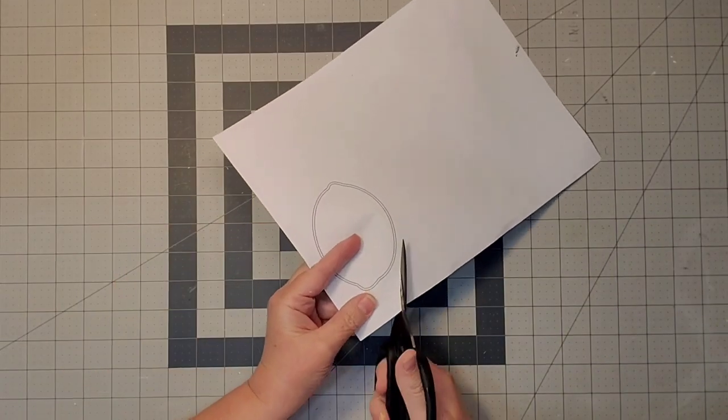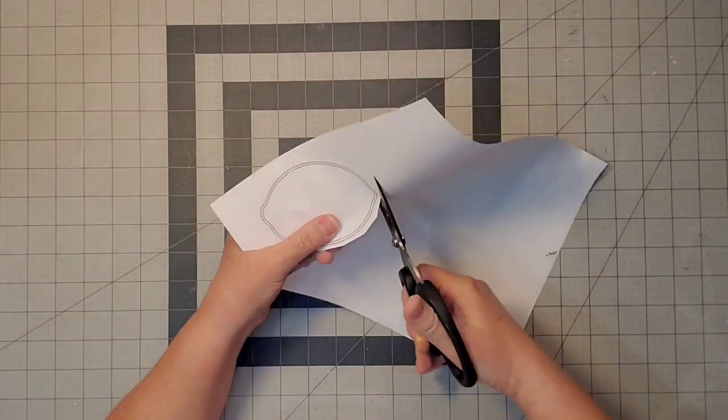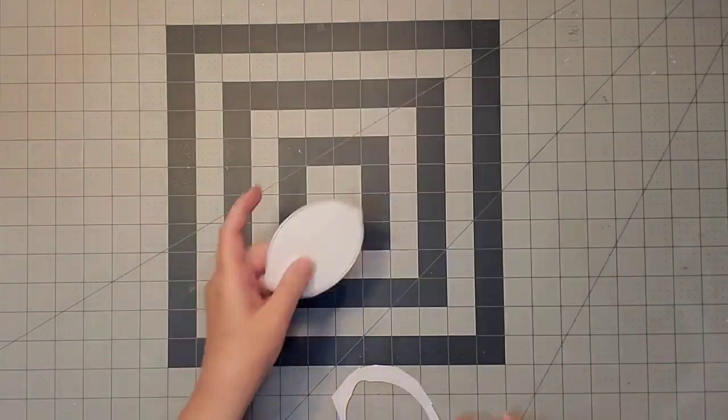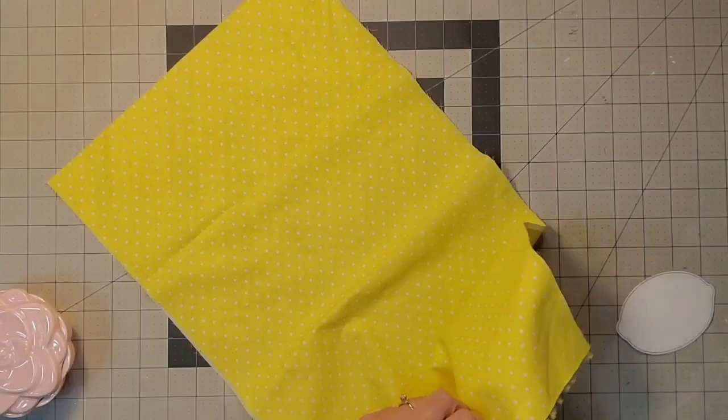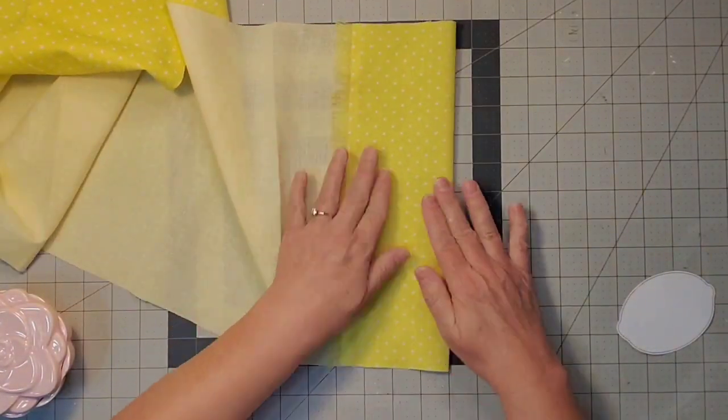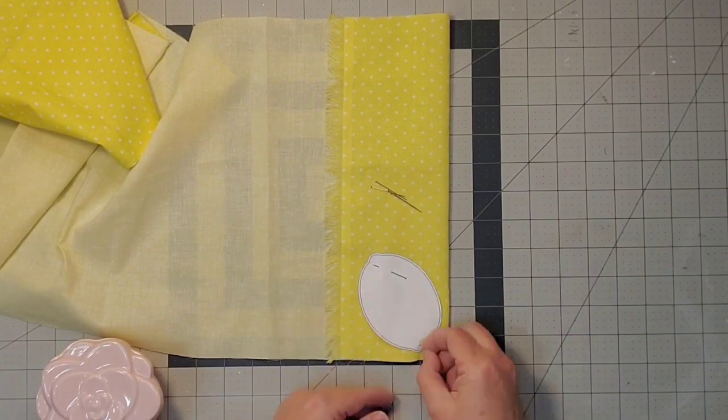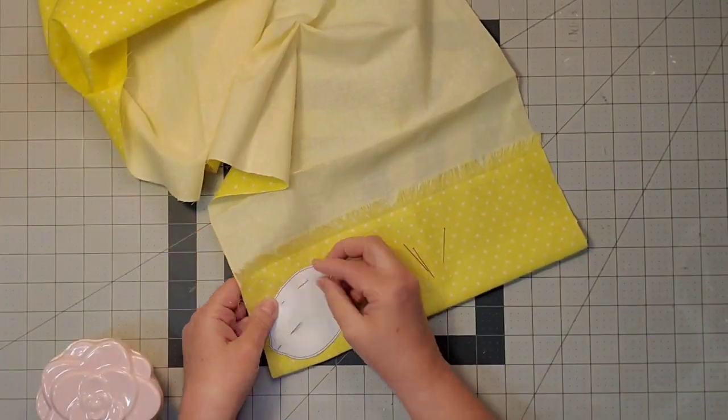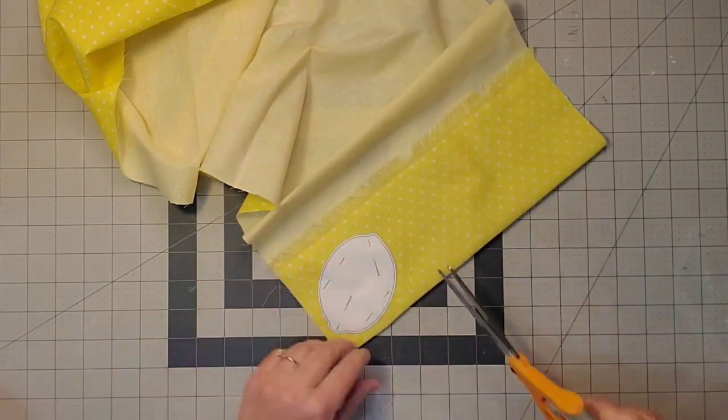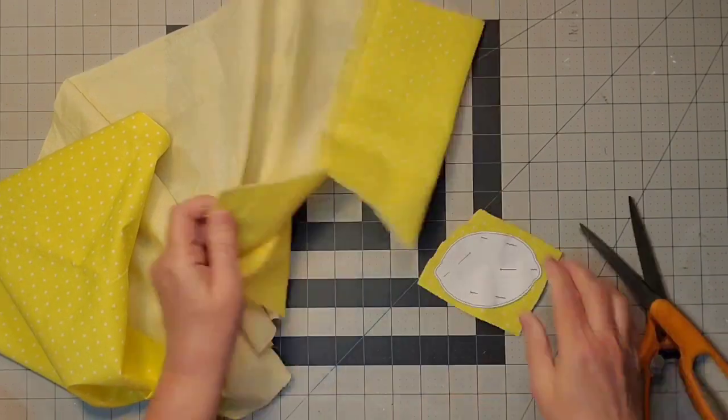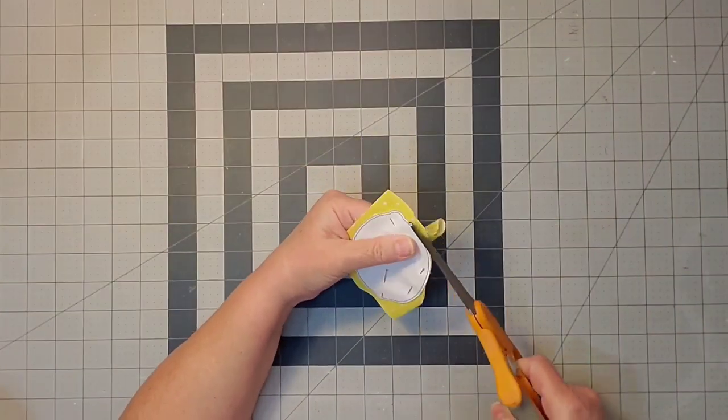Like making a dress, you need to cut out your pattern first. I'll fold over my yellow fabric, place down my lemon, and secure it with straight pins. You don't have to do this if you have a steady hand, but I'm using my fabric shears to cut out my lemon fabric.